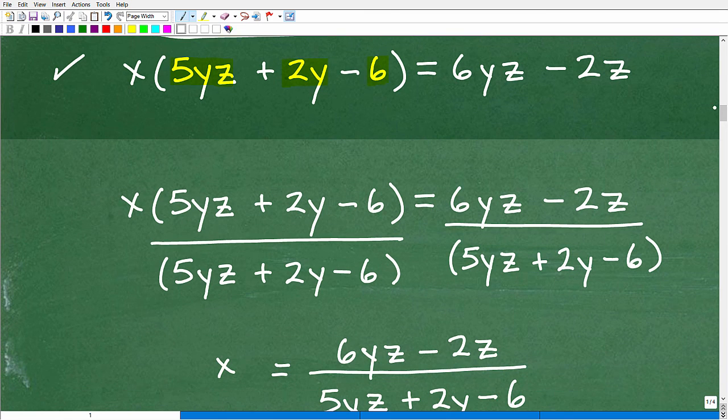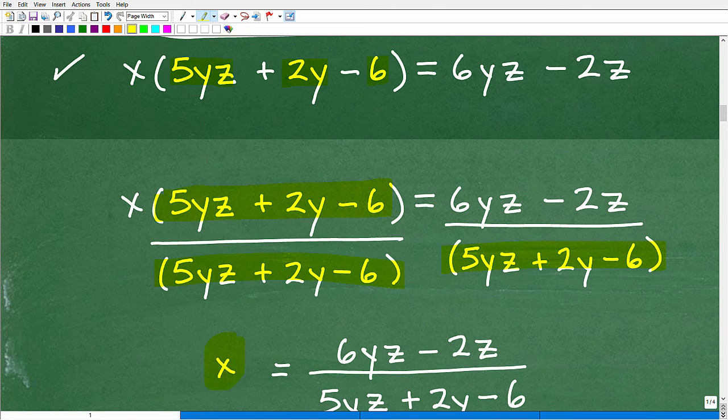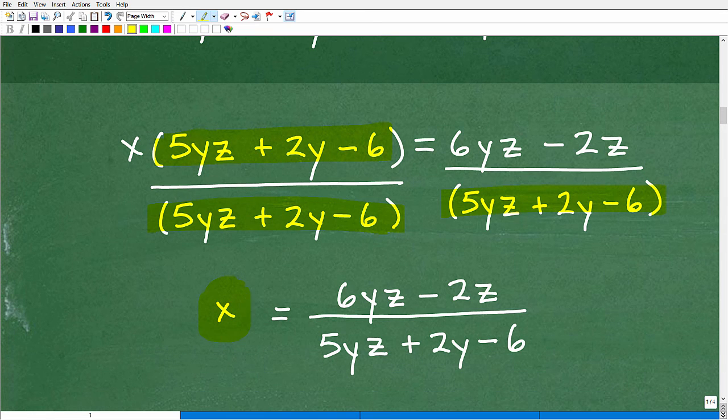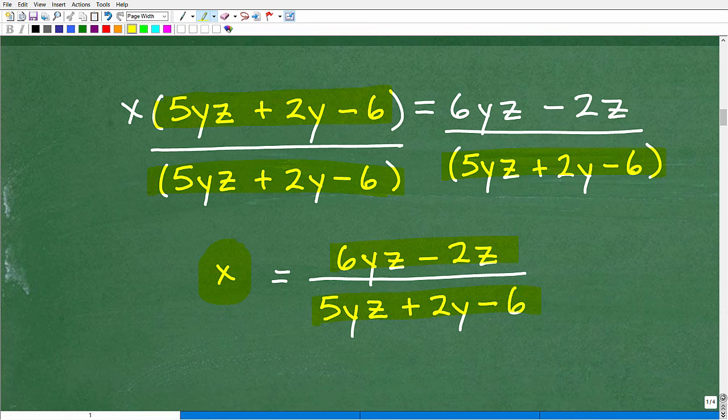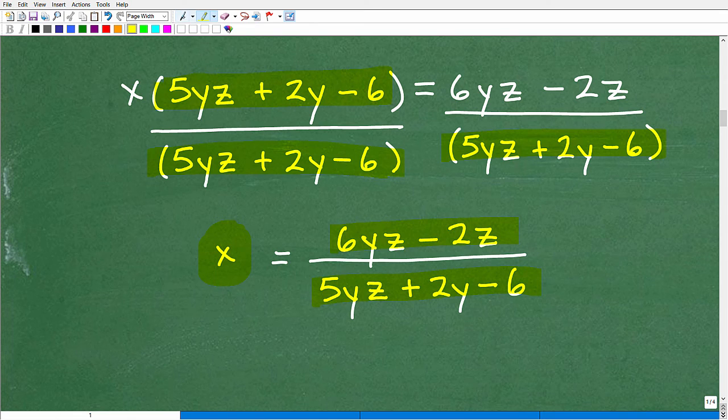then that's excellent. So again, we still have our 6yz minus 2z on the other side of the equation. Now, how do I get x? Well, what I need to do now, I've got this whole thing that I've factored out. I've got my x times this. Well, if I divide both sides of the equation by this big thing, I will get x by itself, because anything divided by itself is 1. So this is our final answer. X is going to be 6yz minus 2z over 5yz plus 2y minus 6.